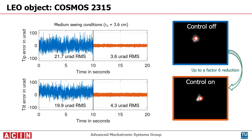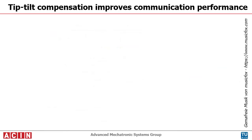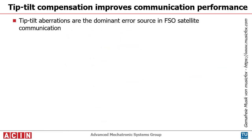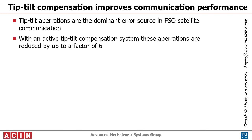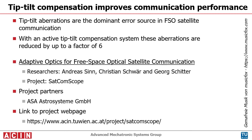The laser spot stays well within the red circle, which represents a typical receiver area. In summary, tip-tilt aberrations are the dominant error source in optical satellite communication. By utilization of an active tip-tilt compensation system, the resulting error is reduced by up to a factor of 6, successfully demonstrating the potential of this approach.